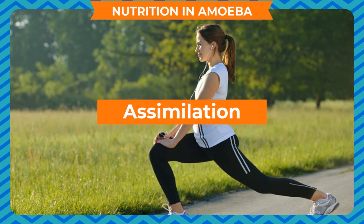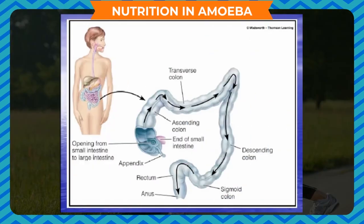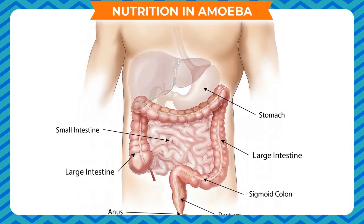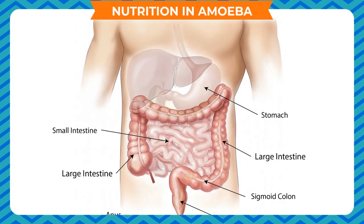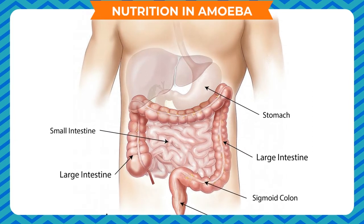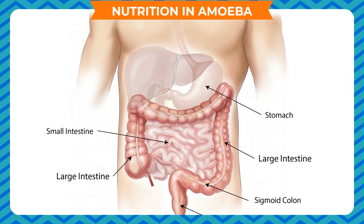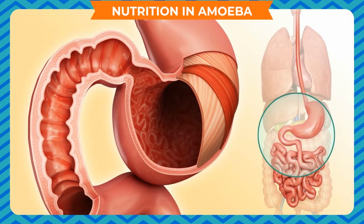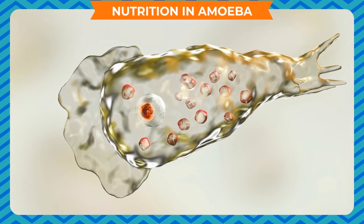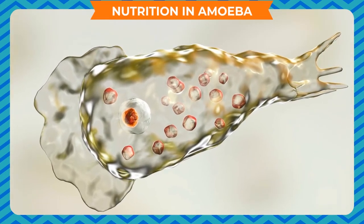This movement of digested matter from the food vacuole to the protoplasm is termed absorption. After absorption, the waste material along with excess water slowly moves within the protoplasm collecting all the waste matter. The food vacuole is now called a contractile vacuole. The contractile vacuole empties its contents into the surrounding water, and this process is called egestion. In this way, all the steps of heterotrophic mode of nutrition are fulfilled in the case of an amoeba.